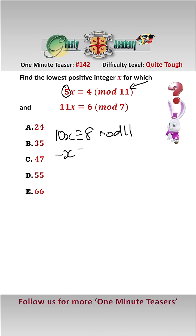Well 10 is equal to minus 1 mod 11, so that gives us minus x equals 8 mod 11, i.e. x equals minus 8 which equals 3 mod 11.